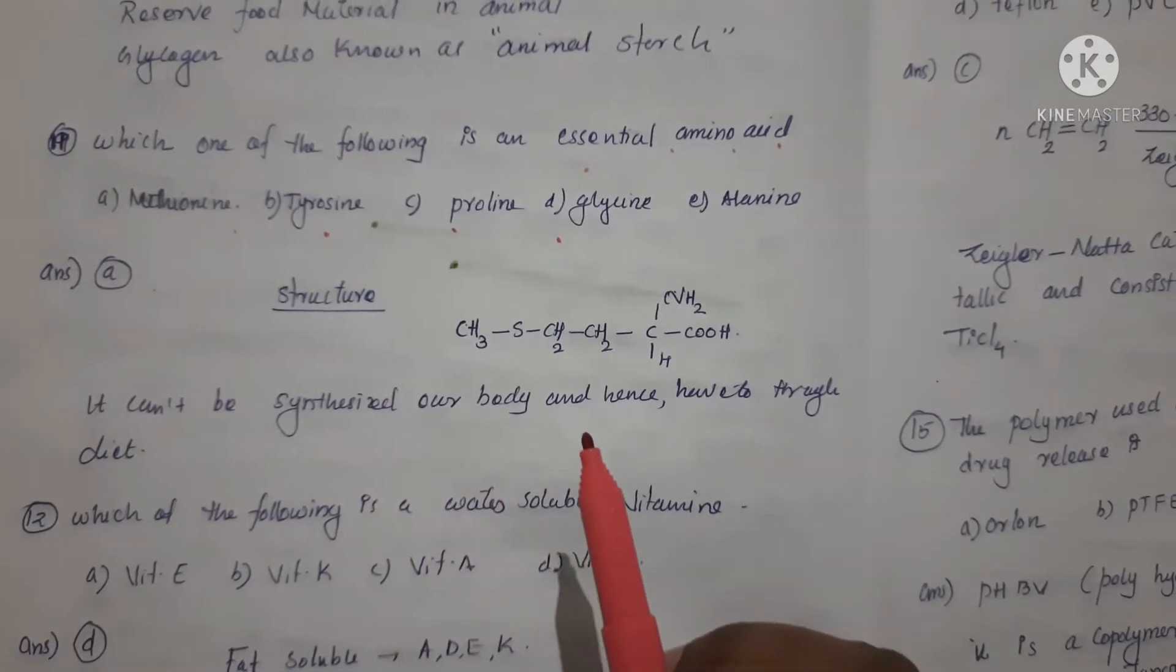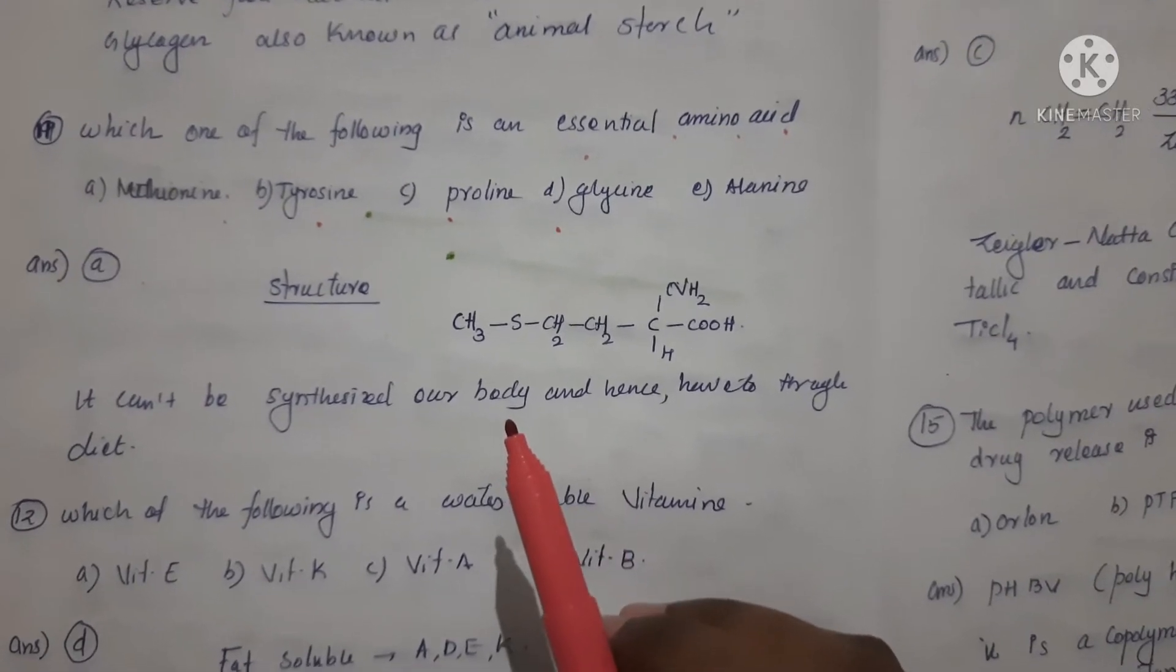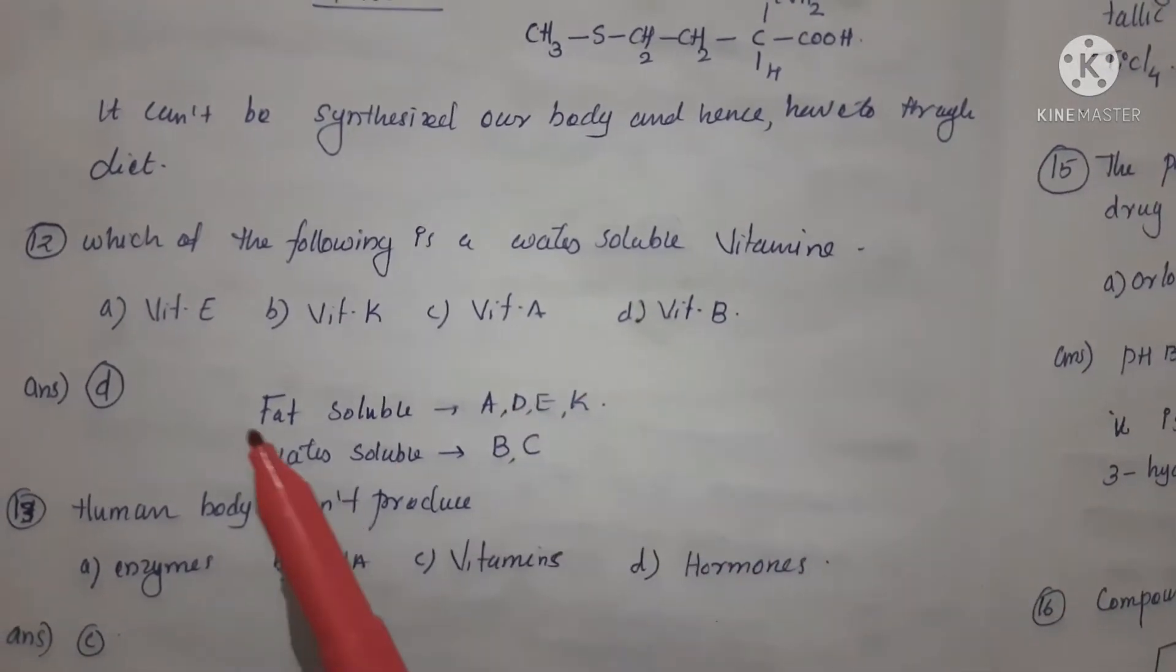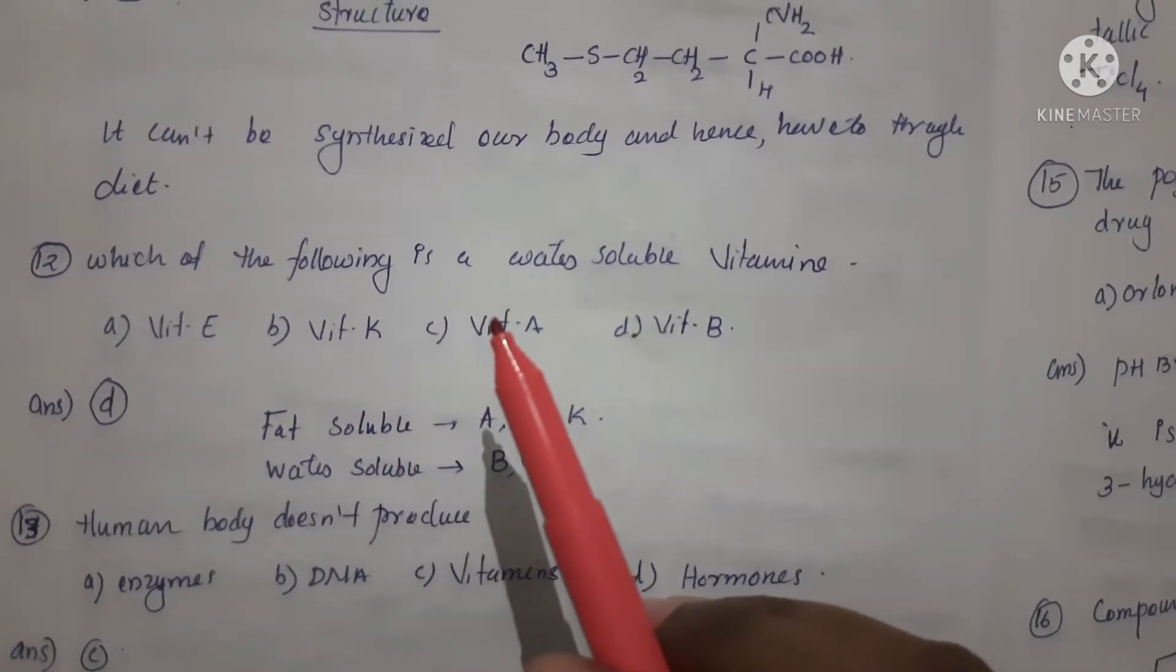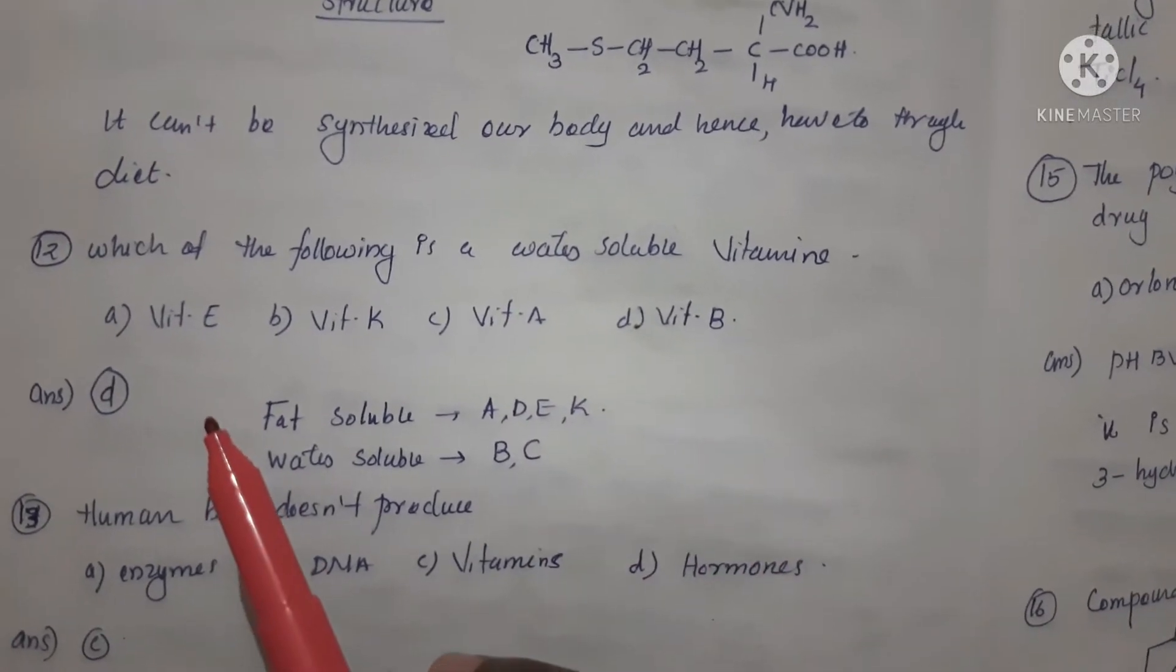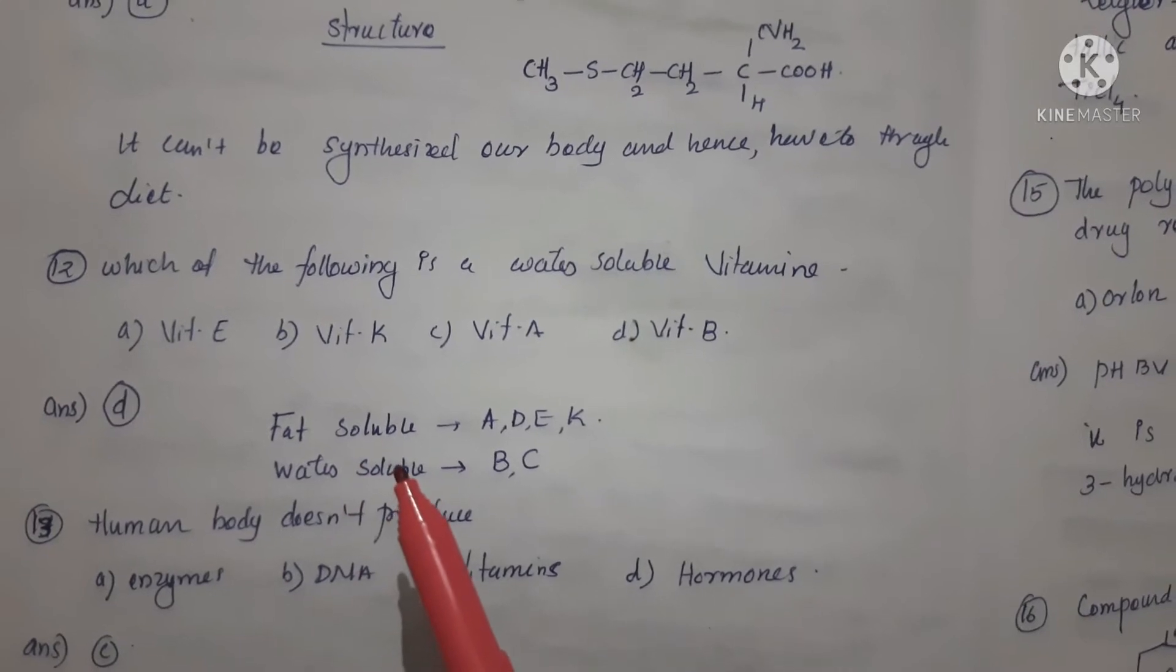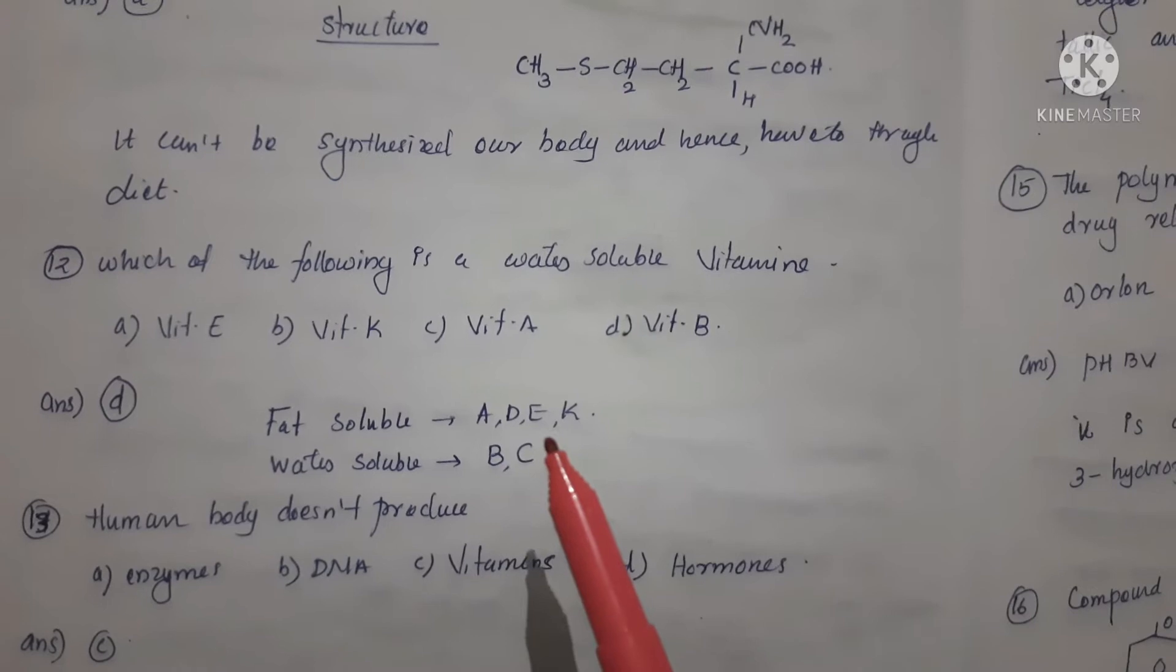Next question: which of the following is a water-soluble vitamin? Option A: vitamin E, Option B: vitamin K, Option C: vitamin A, and Option D: vitamin B. Correct answer is Option D, vitamin B. Fat-soluble vitamins are A, D, E, K. Water-soluble vitamins are B and C.